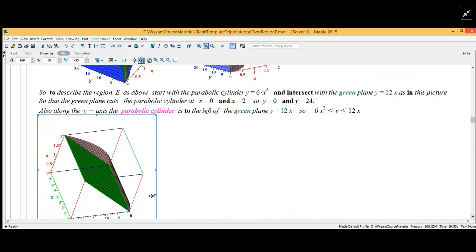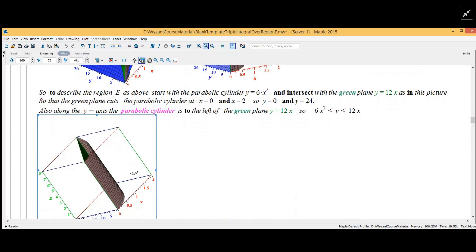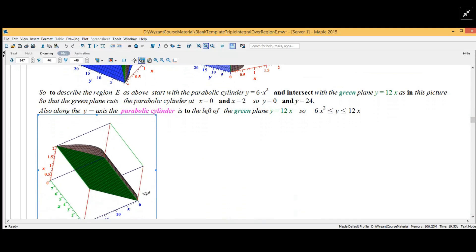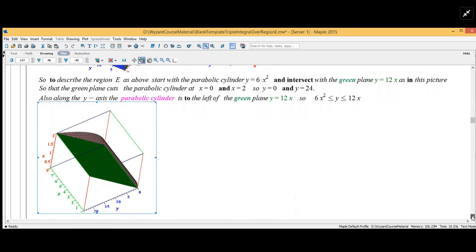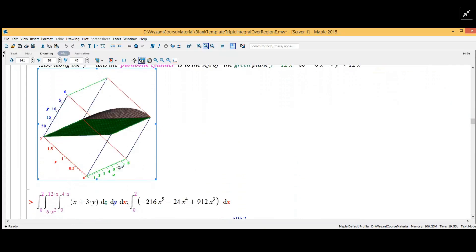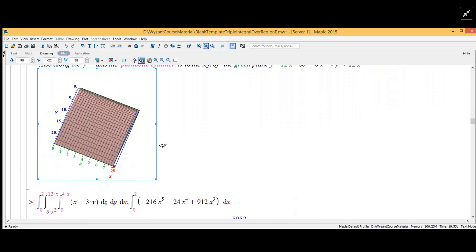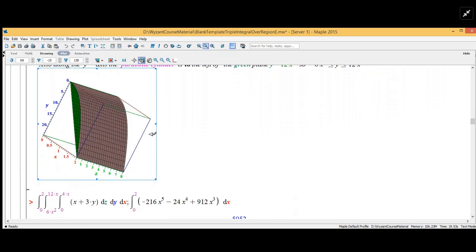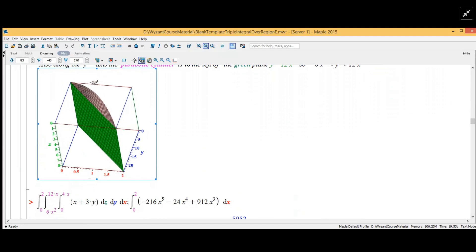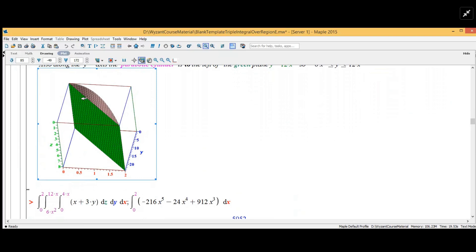You can see from that one a couple things going on. The green plane cuts the parabolic cylinder at x equals 0 and x equals 2, so that gives us the constants and our variable will be x.